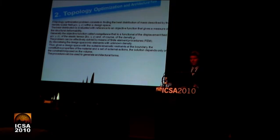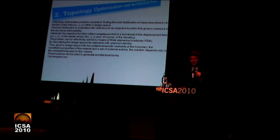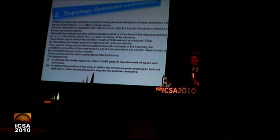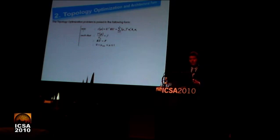Generally we have to solve a problem: we have to minimize a function called compliance. To solve this function we use finite element procedures, FEM. The procedure is straightforward. First, you choose a design space — the area where you want to work. Second, you define the positions of the zones in which the generated structure has to interact with the soil or other structures, and impose suitable restraints. Third, you define the design actions. Fourth, you fix the volume constraints. The topology optimization problem is then posed in the form visible in the picture.